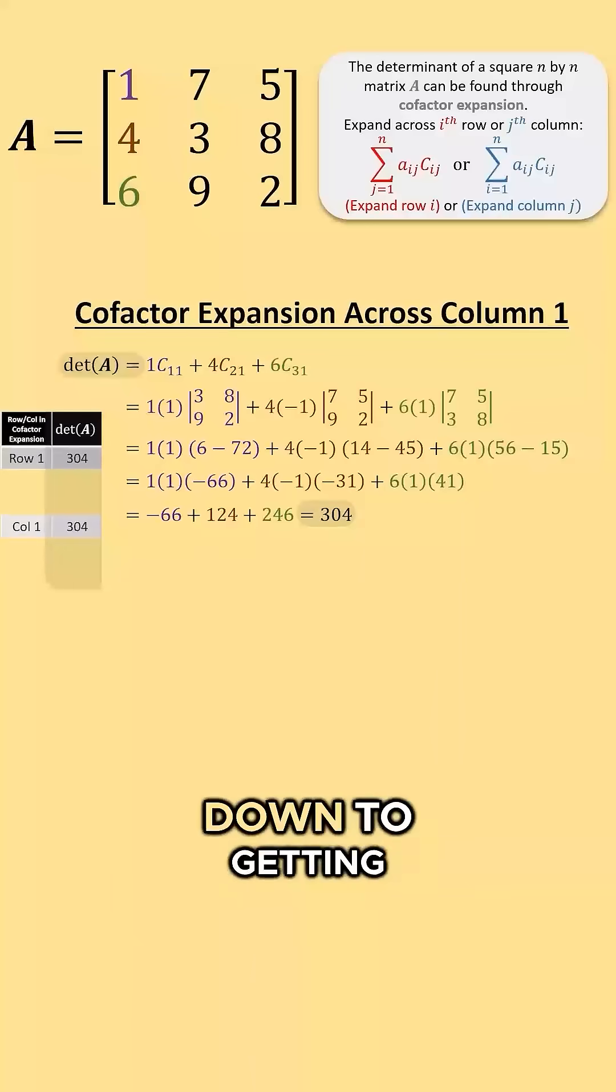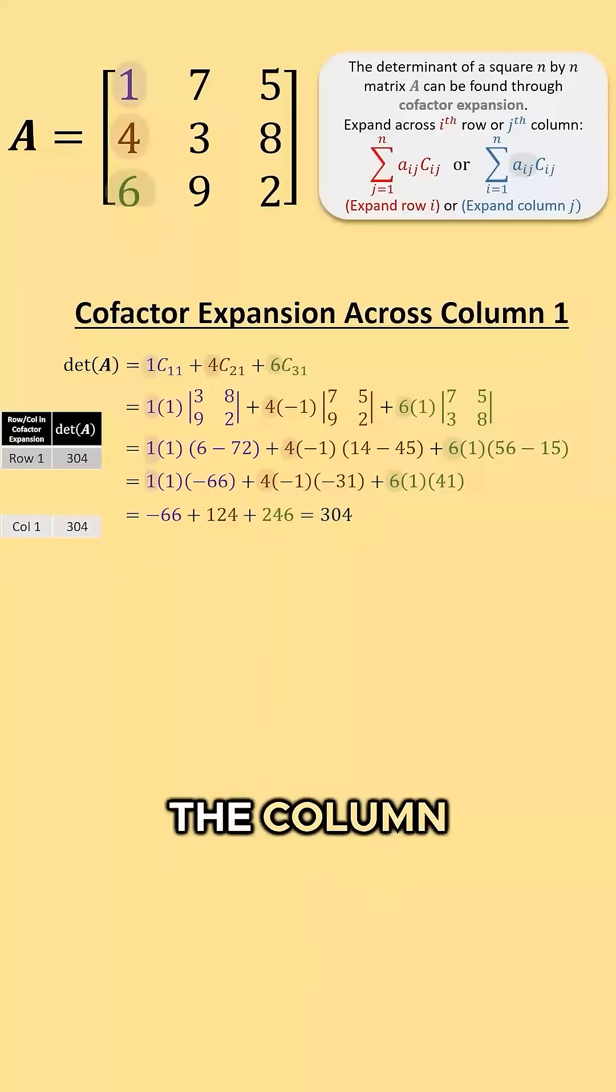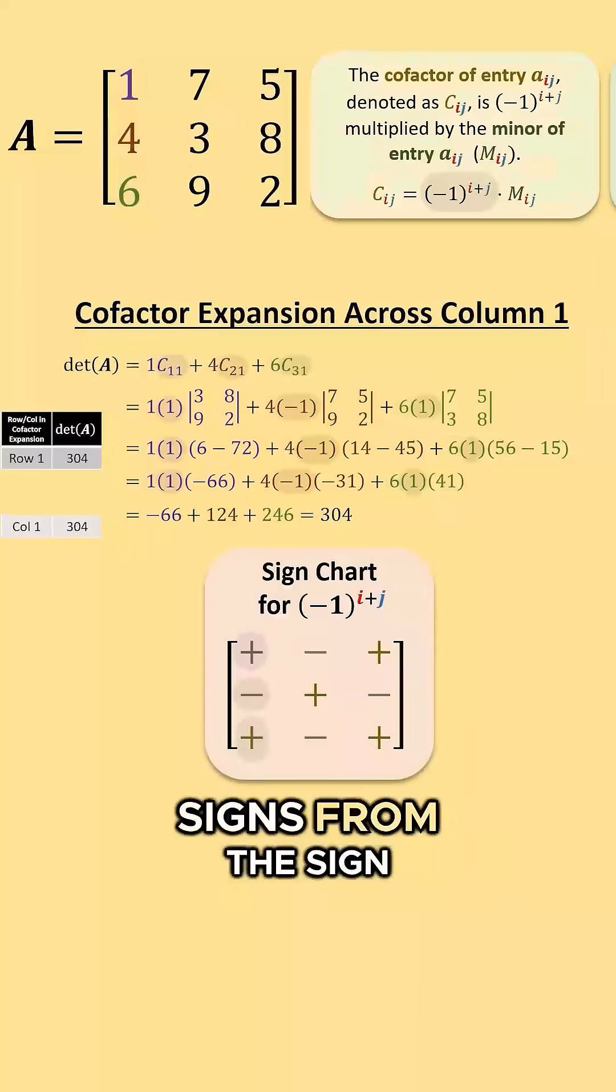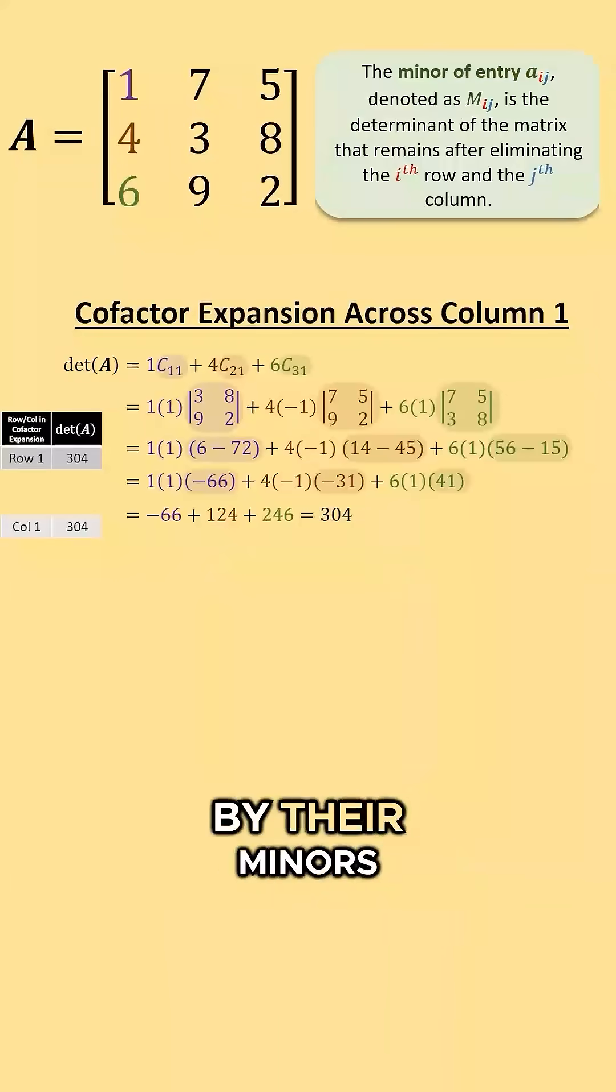Mainly, it just comes down to getting the values from the row or column you select, their respective signs from the sign chart, and multiplying by their minors.